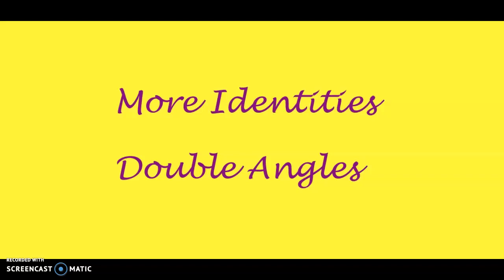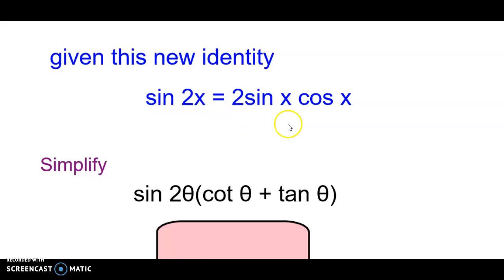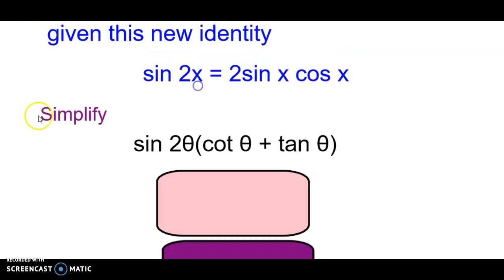We have some more identities today — we're going to work with double angles. Here's the first new one: sine of 2x is a double angle because it's 2x. Anytime you see sine of 2x, it can be substituted with 2 sine cosine.